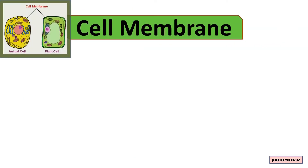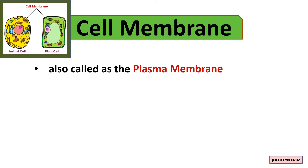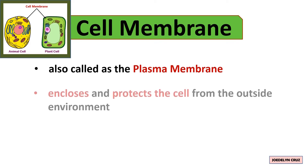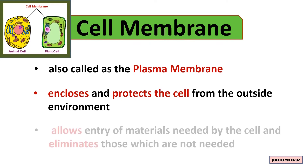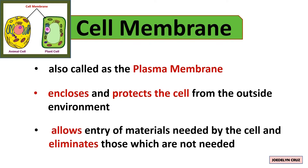The cell membrane is also called the plasma membrane. It encloses and protects the cell from the outside environment. It also allows entry of materials needed by the cell and eliminates those which are not needed.